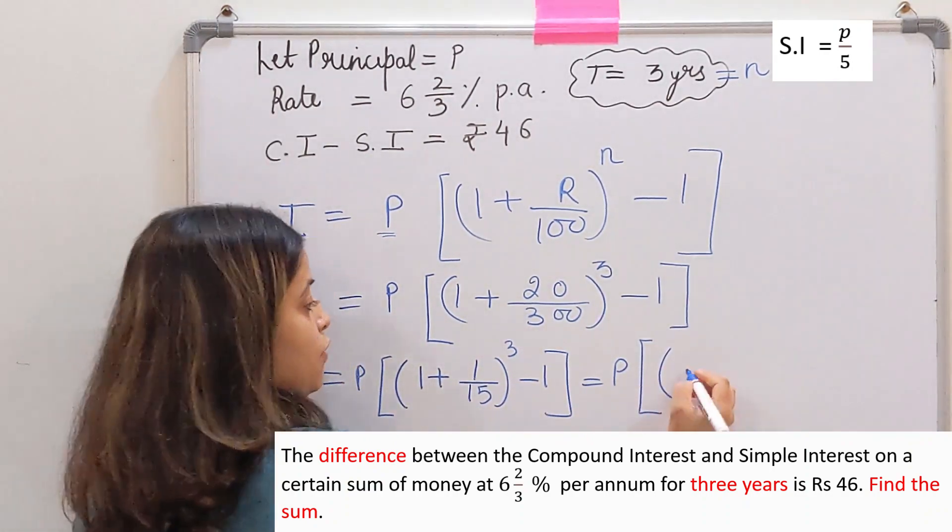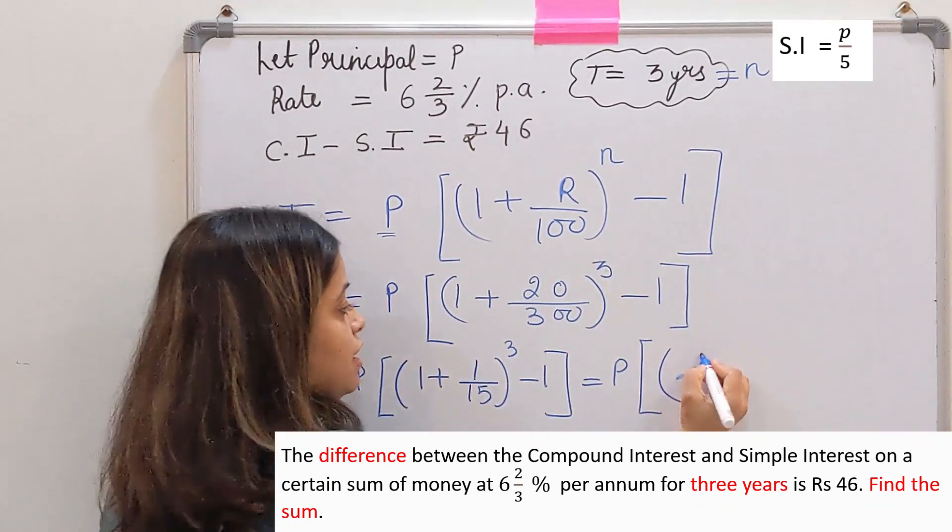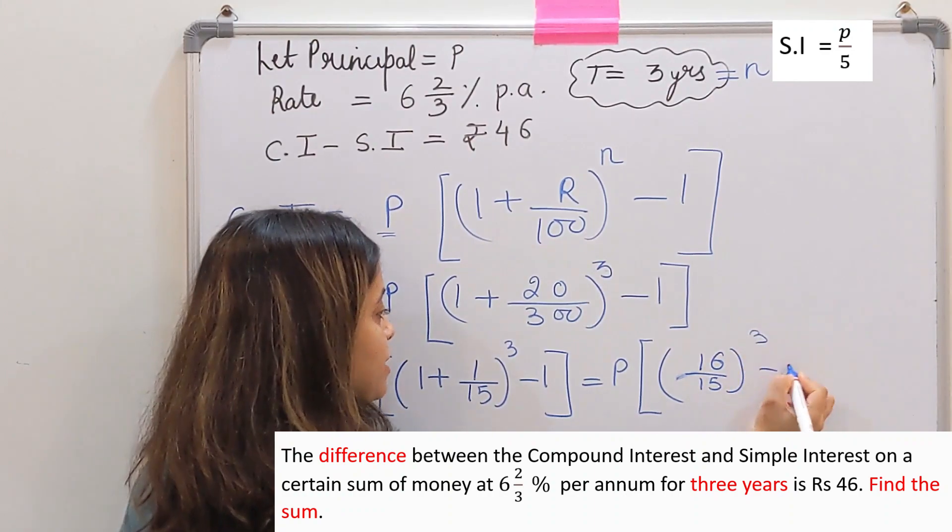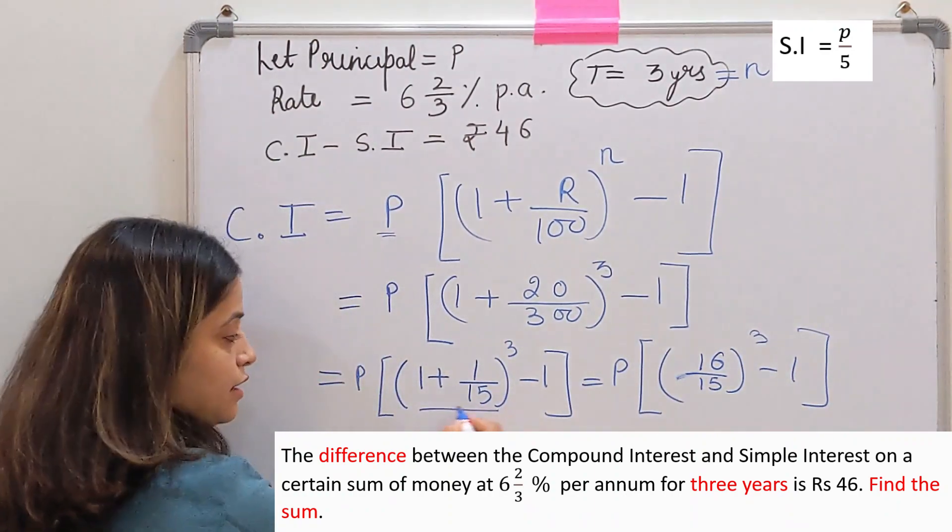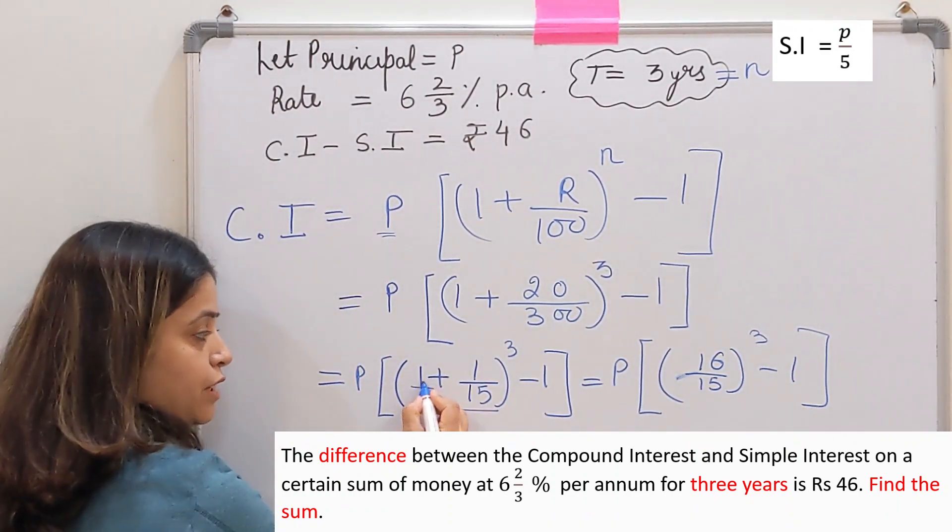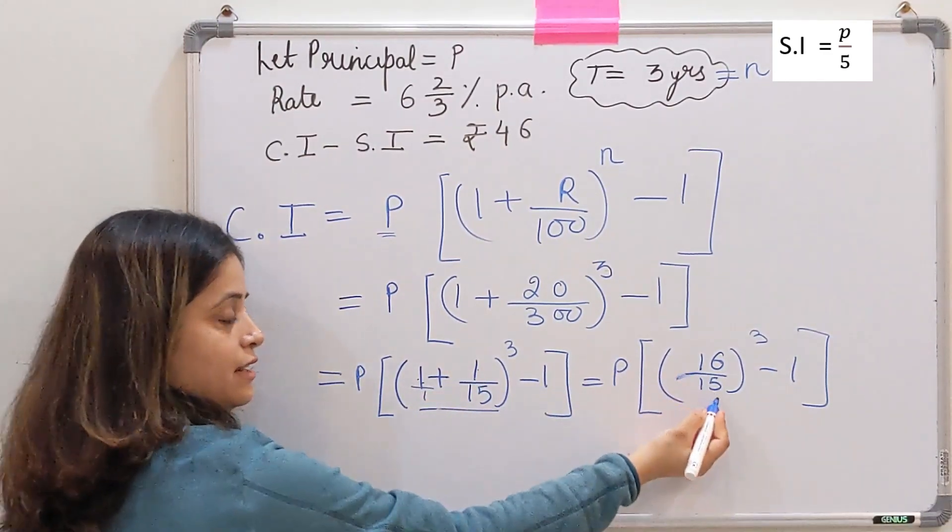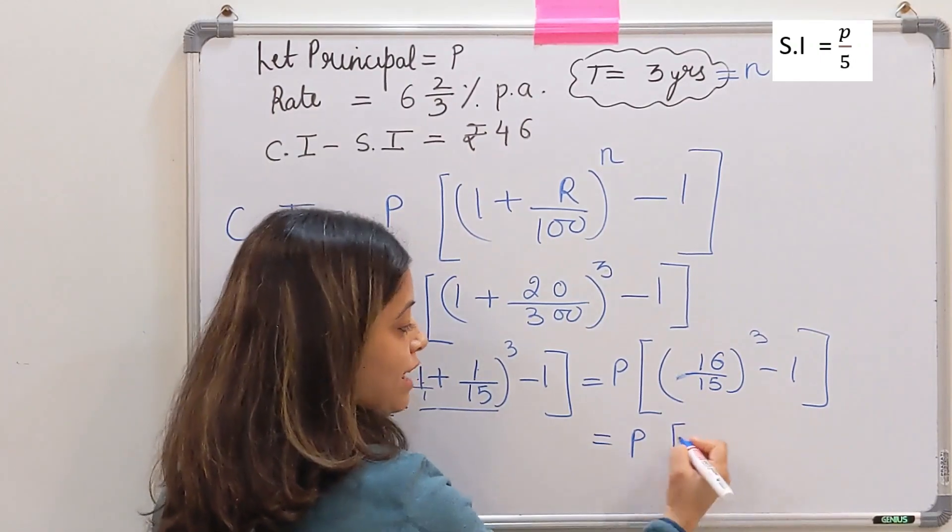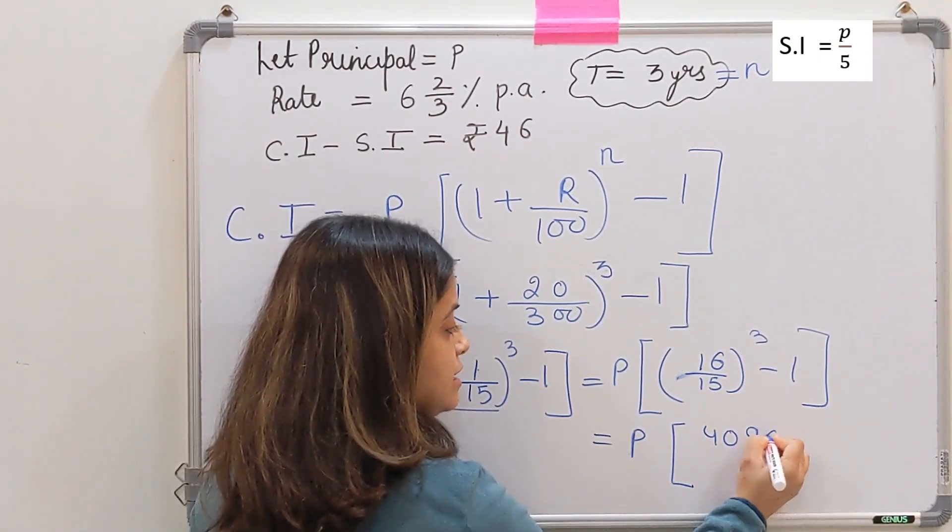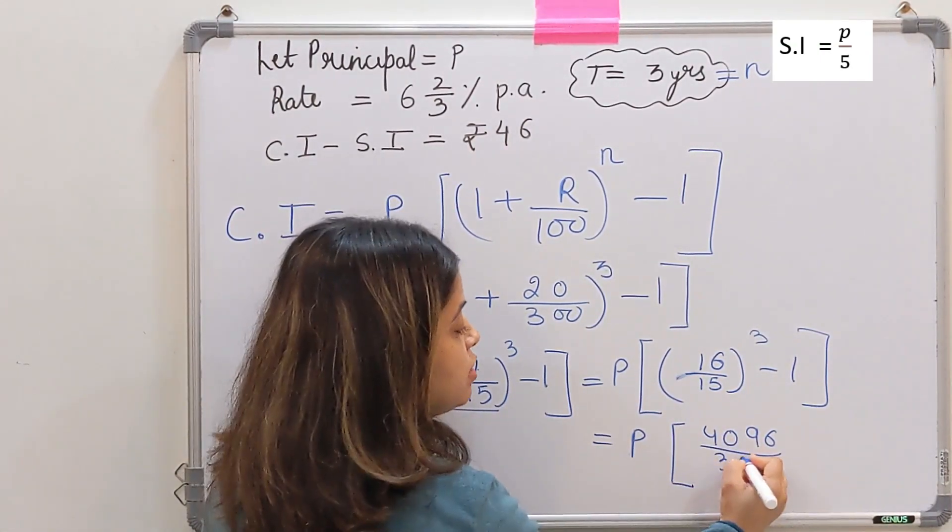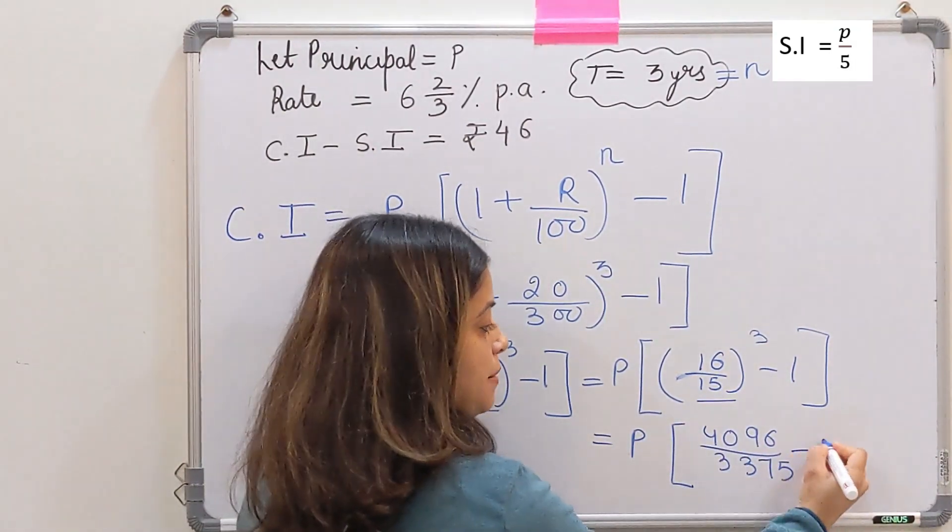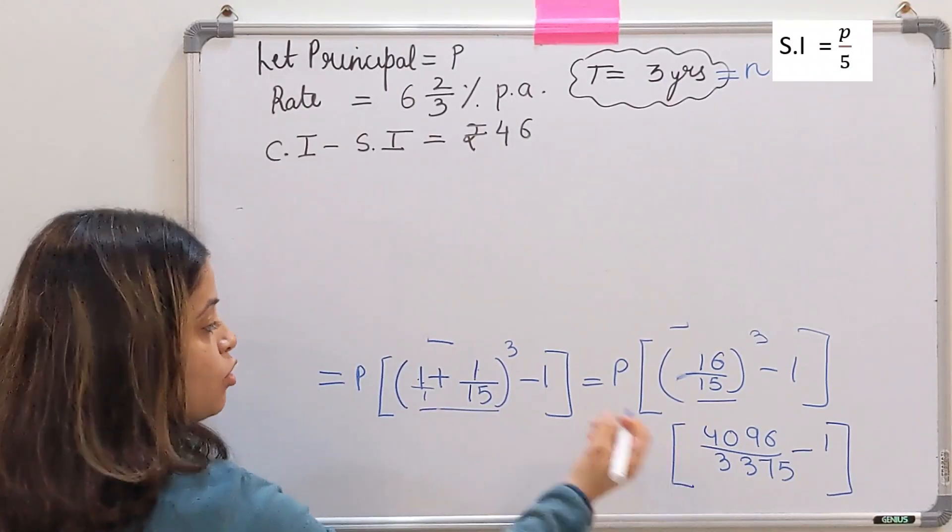Taking LCM, we get 1 + 1/15 = (15 + 1)/15 = 16/15. So it becomes (16/15)^3 minus 1. Calculating (16/15)^3, we get 4096/3375.